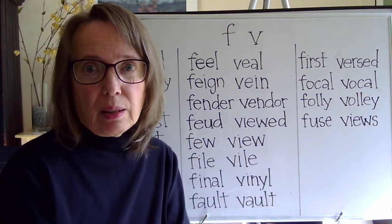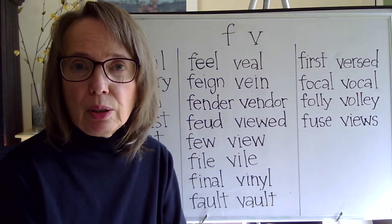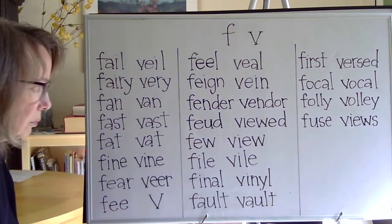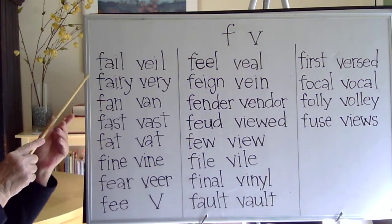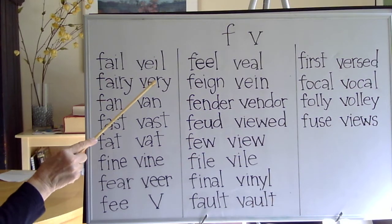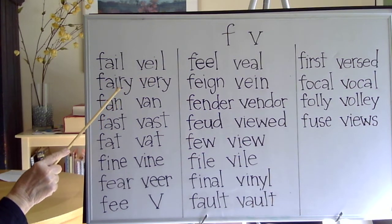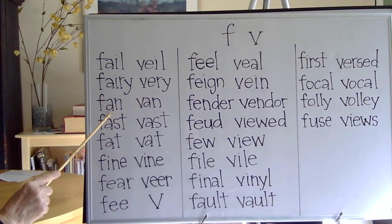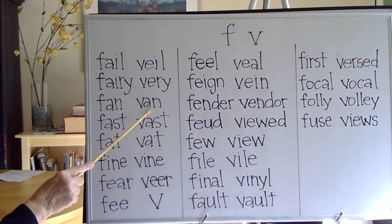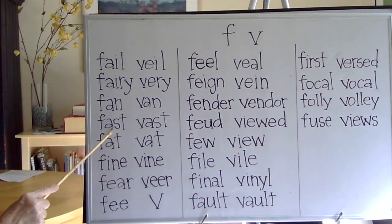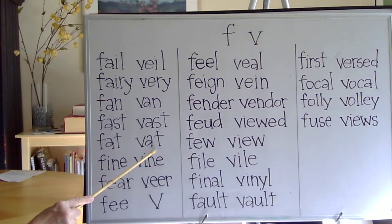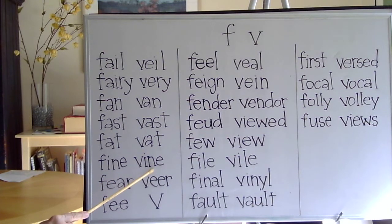I'm going to read these minimal pairs and afterwards we'll do a practice exercise. Fail, vail. Fan, van. Ferry, very. Fast, vast. Fat, vat. Fine, vine.